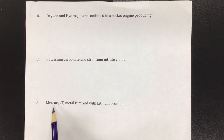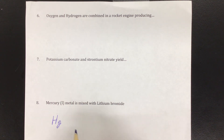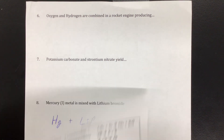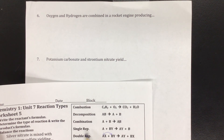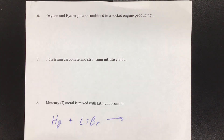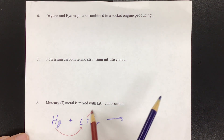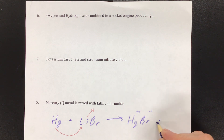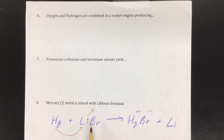Number eight: mercury metal is mixed with lithium bromide. Mercury is Hg, and lithium bromide is an ionic compound — a metal and a nonmetal — so LiBr, plus one and minus one. This is an element and an ionic compound, so this is also a single replacement. Mercury is going to come kick the lithium out, bond with the bromine, and send the lithium off by itself. We end up with mercury bromide — mercury is plus one, bromide from the seventh column is minus one — so HgBr, plus lithium off by itself. Balancing: one mercury, one mercury; one lithium, one lithium; one bromide on each side. Done.